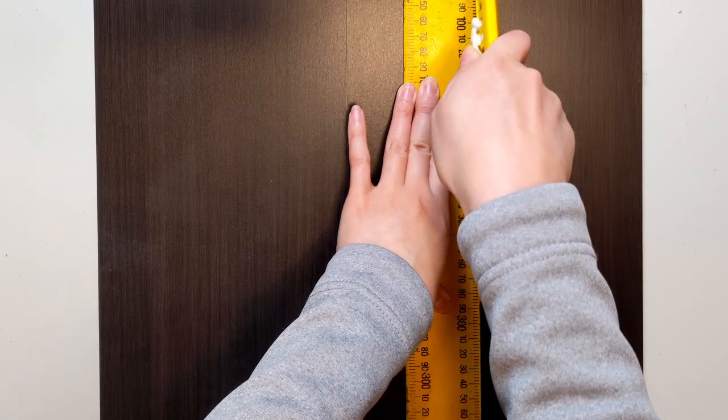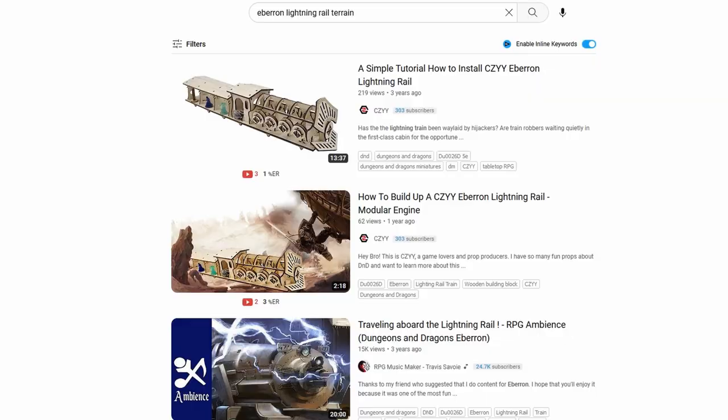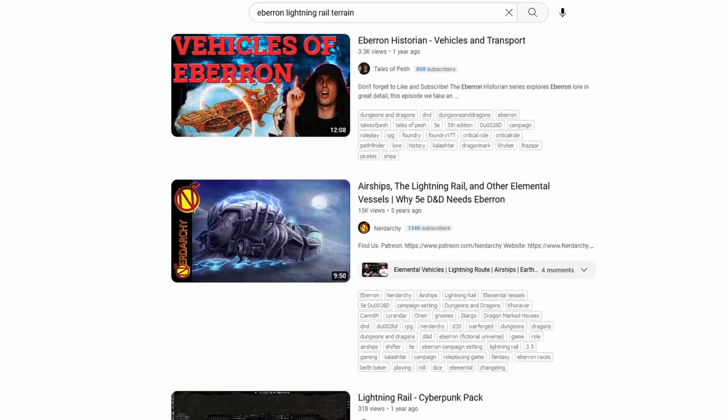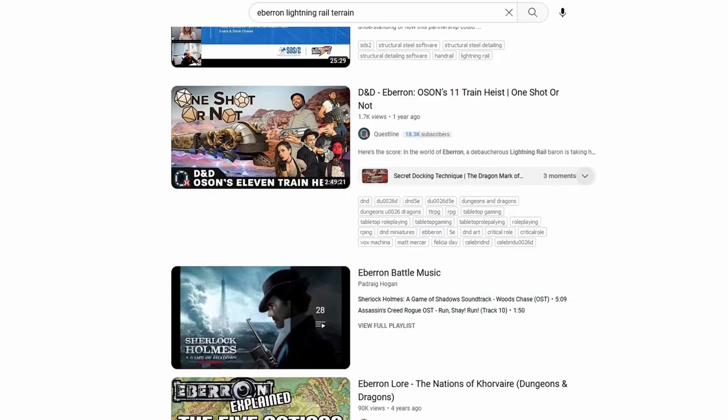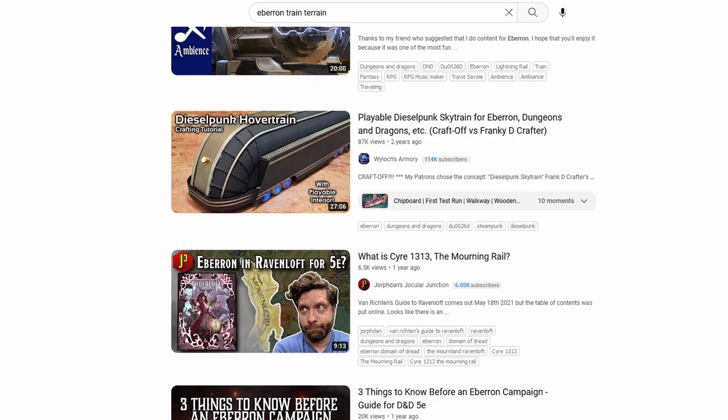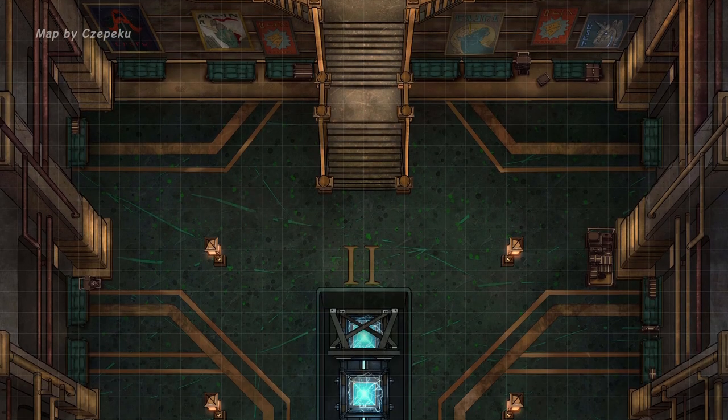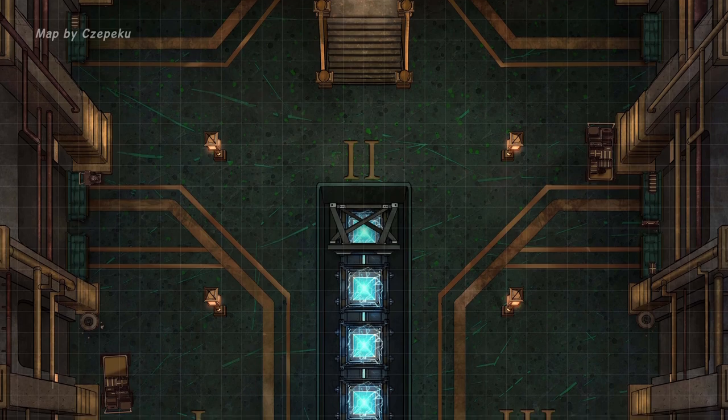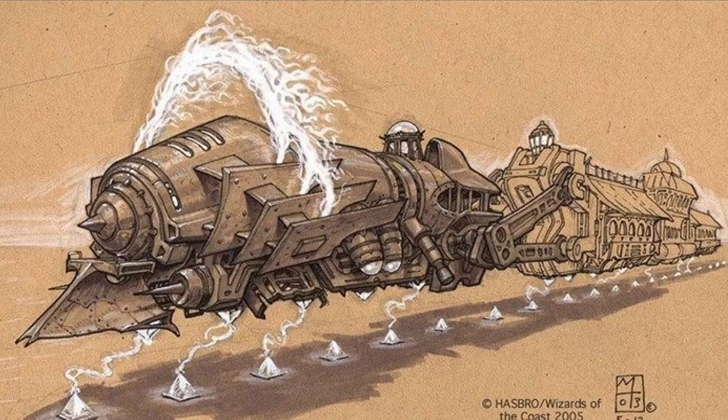Hello, my name is Rachel and I couldn't find a single decent tutorial on how to make a playable lightning rail or tabletop train except for Wylock's Dieselpunk Skytrain. Given that my D&D party was about to face an Eberron station encounter, I thought to myself, yeah, I want to make that.